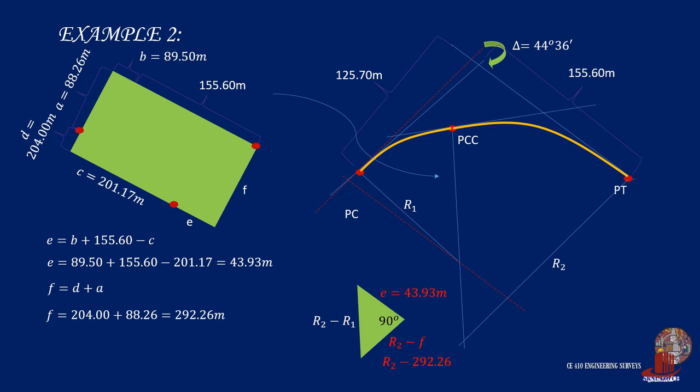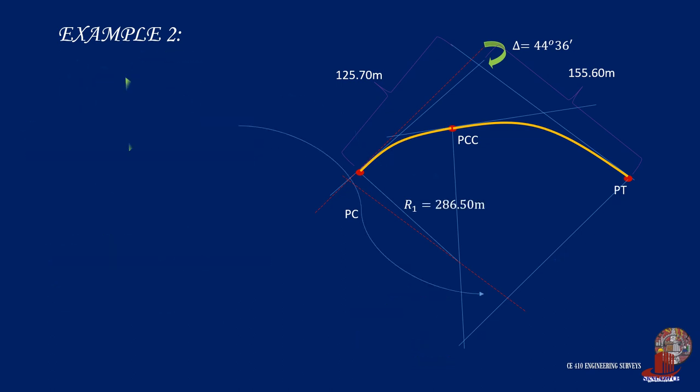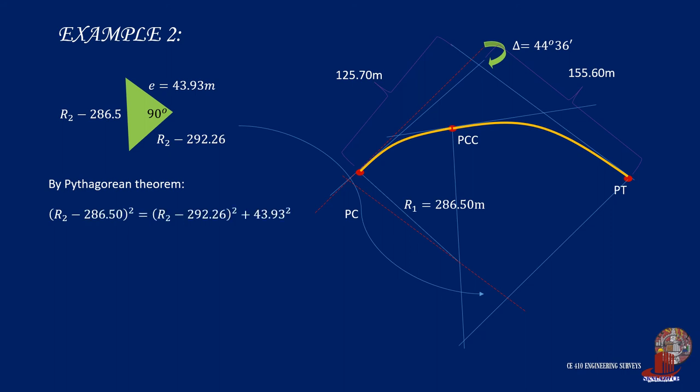Knowing F, the other side of the triangle is R2 less F or 292.26. By Pythagorean theorem, the square of the hypotenuse equals the square of both sides. So R2 minus 286.5 squared equals R2 minus 292.26 squared plus 43.93 squared. Expand the equation and simplify as 11.52 R2 equals 5263.5, which leads to R2 as 456.9 meters.